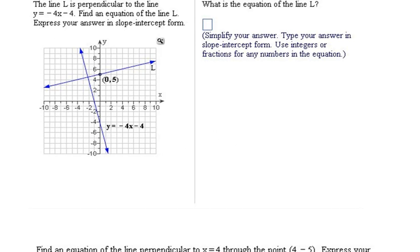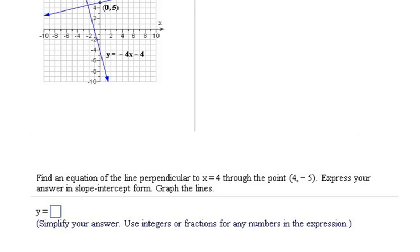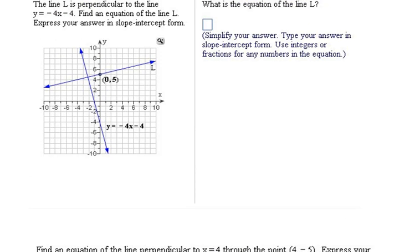Okay, let's actually work a problem. This one says the line L is perpendicular to the line y equals negative 4x minus 4. Okay, so we have a line L that they have said is actually this line right here. There's our line L.